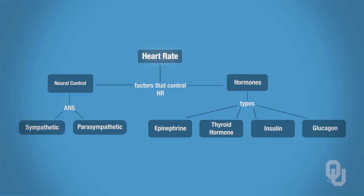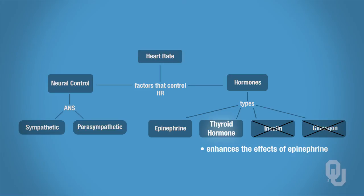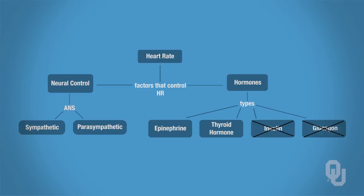Here are the factors that regulate heart rate. Neural control via the autonomic nervous system can regulate heart rate. More specifically, the parasympathetic nervous system will lower heart rate, while the sympathetic nervous system will raise heart rate. Hormones are also involved, including epinephrine, which is released as a result of sympathetic stimulation, and thyroid hormone, which enhances the effects of epinephrine. Chronic hyperthyroidism — an abnormally high level of thyroid hormone — can actually weaken the heart, because thyroid hormone not only increases heart rate but also increases force of contraction.